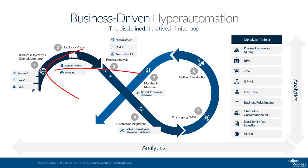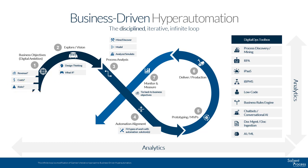It doesn't matter if your process is running more efficiently if the end outcome isn't helping you reach those business objectives. What if your cycle time is much better, but you are running into regulatory issues? Is that helping you if your business objective is to lower risk? If you aren't getting the proper process outcomes, you'll need to figure out how to change your processes to achieve the desired result. As you start to see initial success, you'll need to be able to govern and scale your program.